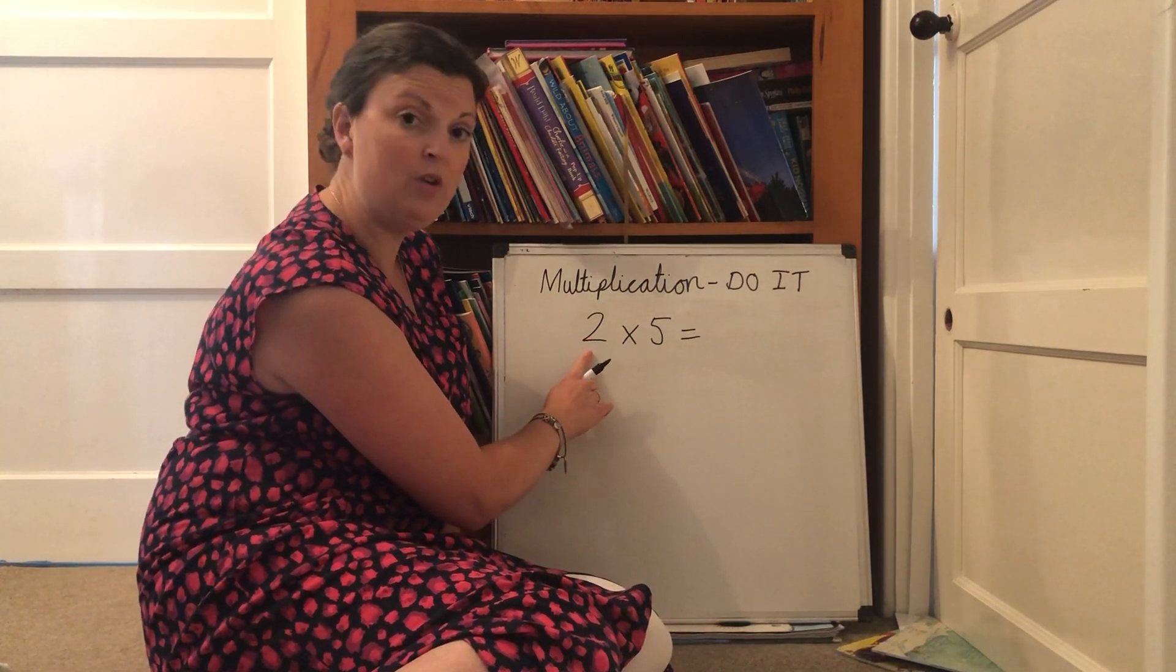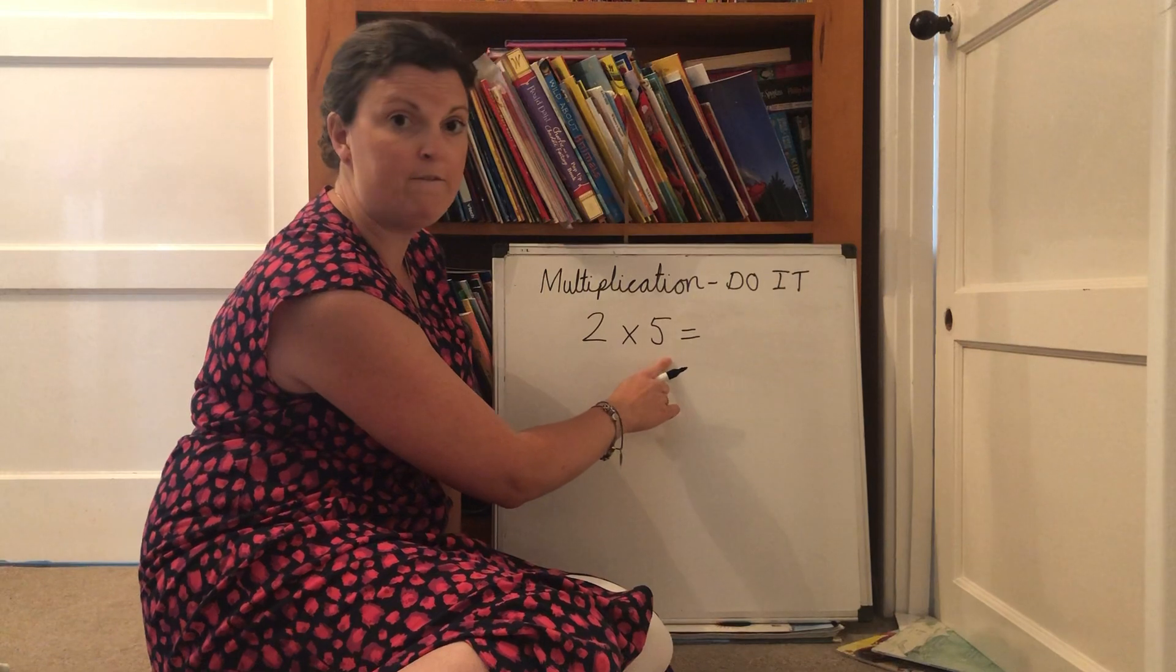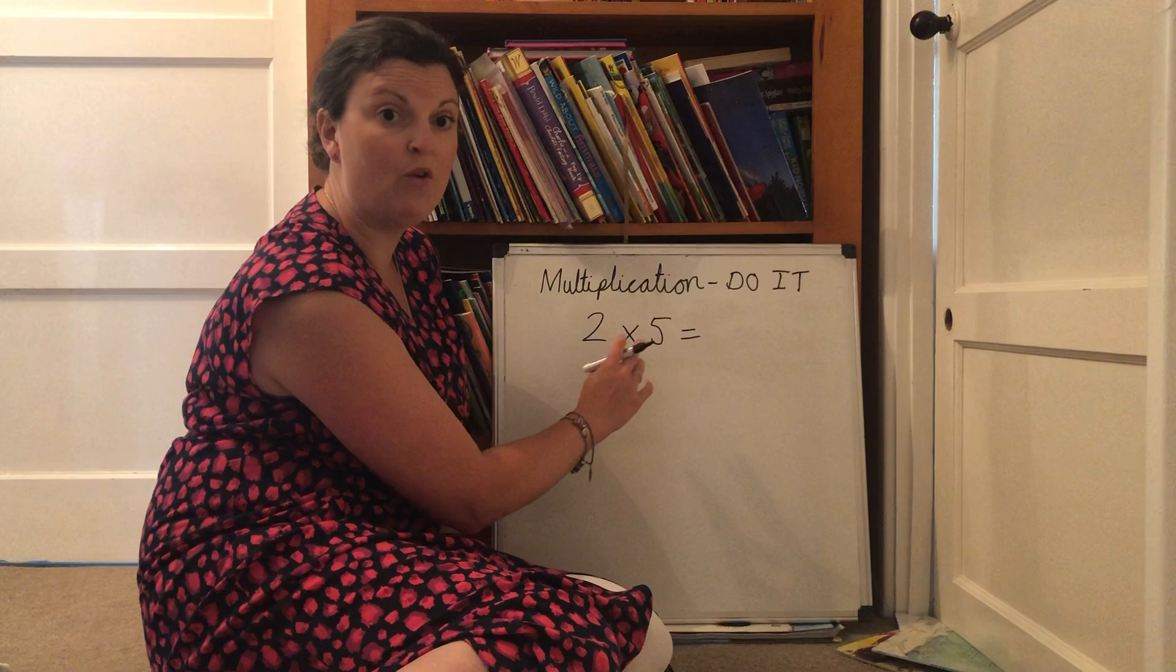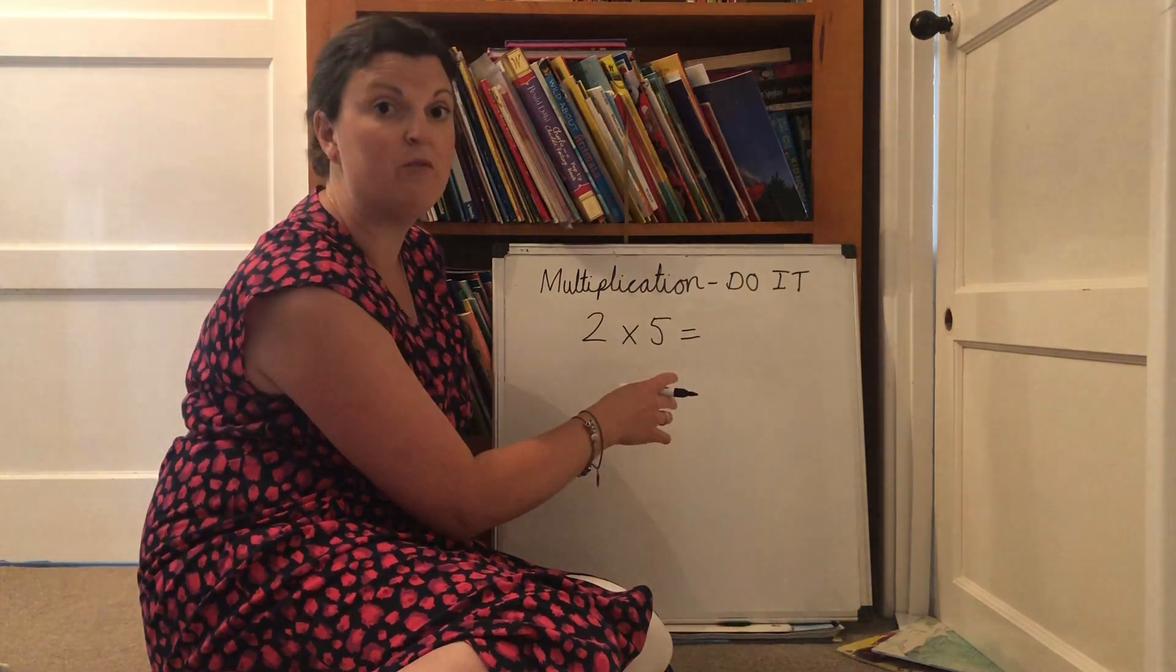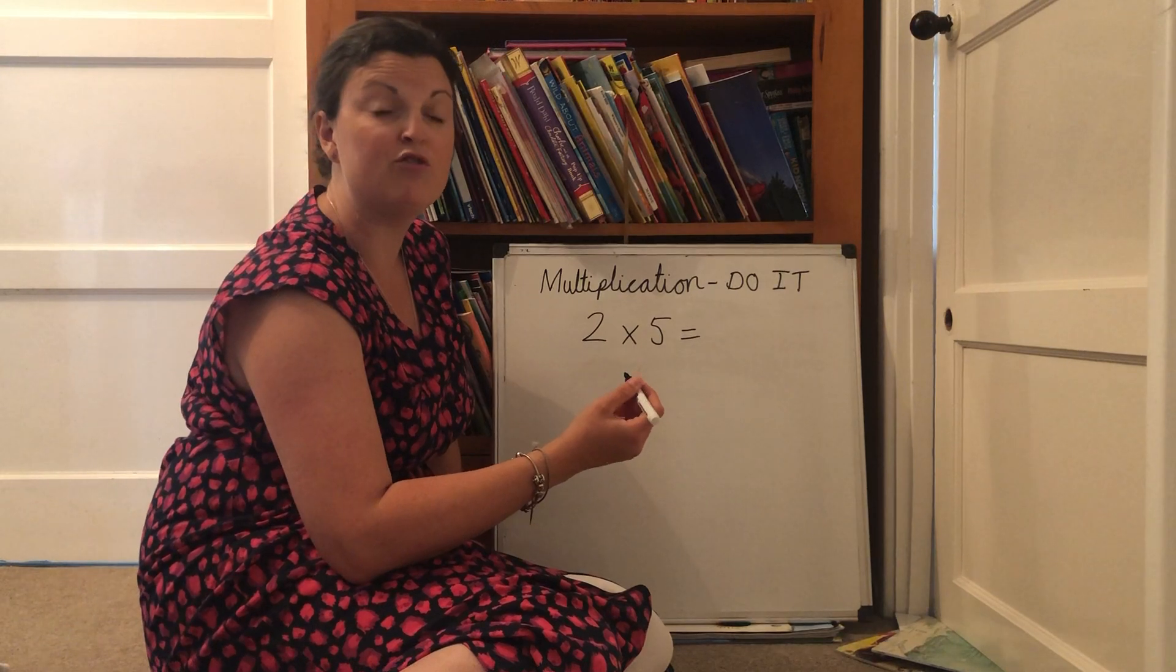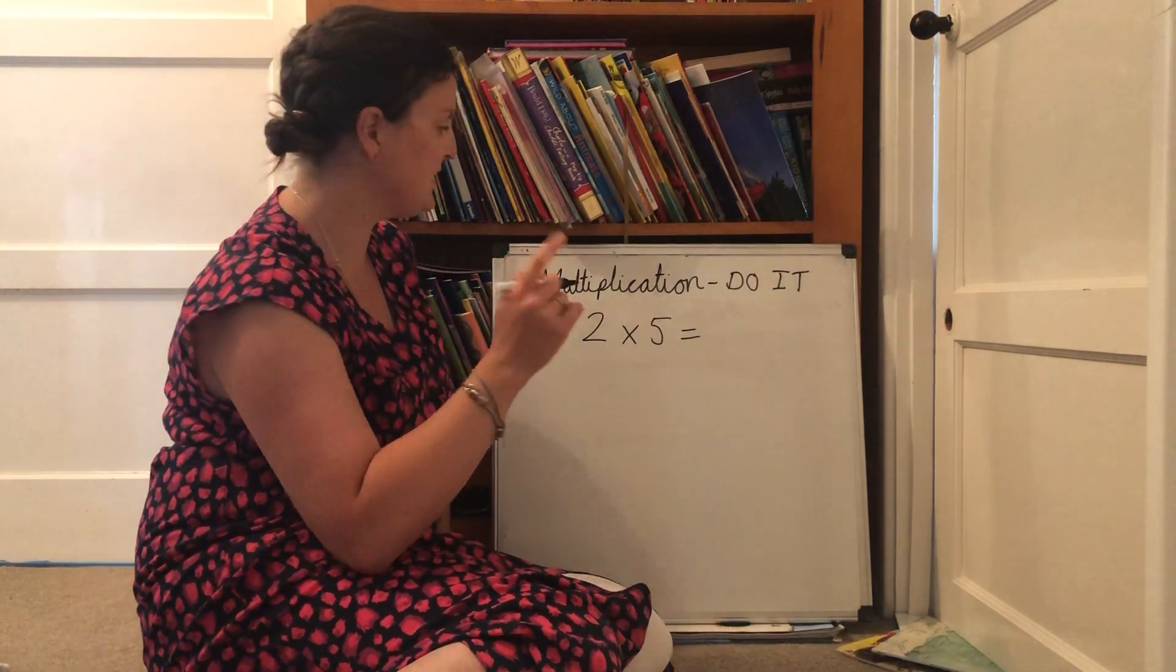So I have two times five, two multiplied by five, two groups of five or two lots of five. We can use all of that language and I'm going to draw what's called an array to help me. Hopefully you'll remember how to do these.